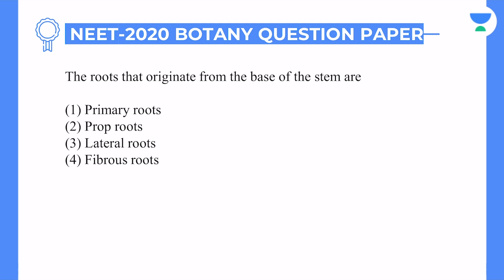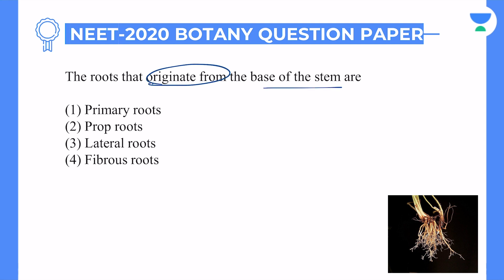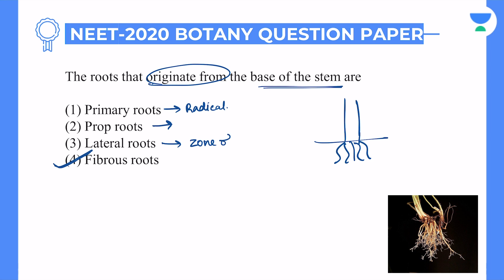Next question: the roots that originate from the base of the stem are — a morphology question. He is asking that roots originating from the base of the stem, where the stem is finished, exactly at that same point you have roots, and that is seen in fibrous roots. Fibrous roots, option number four, will be the correct answer. Primary roots come directly from the radicle; prop roots come from the air; lateral roots originate from the zone of maturation.